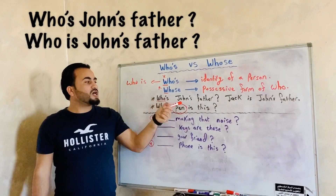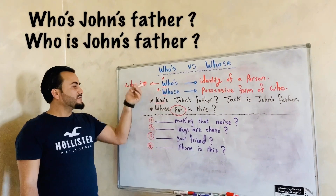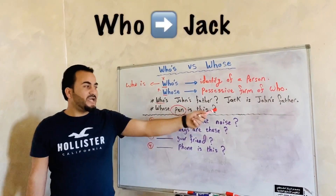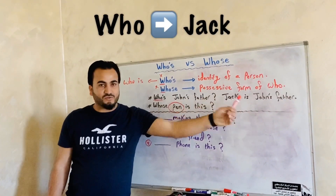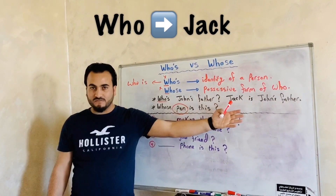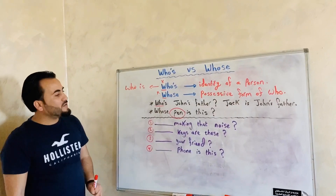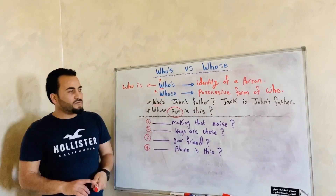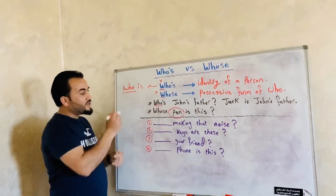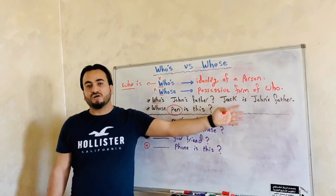Who's John's father? Or, who is John's father? Jack is John's father. So here I am asking about a person. When we want to answer this question, we just take out the word 'who.' Who is John's father? Jack is John's father.